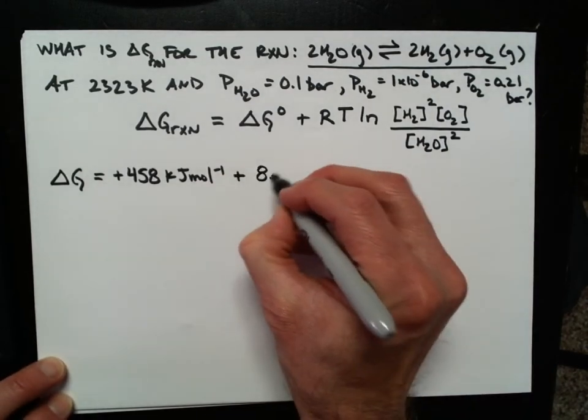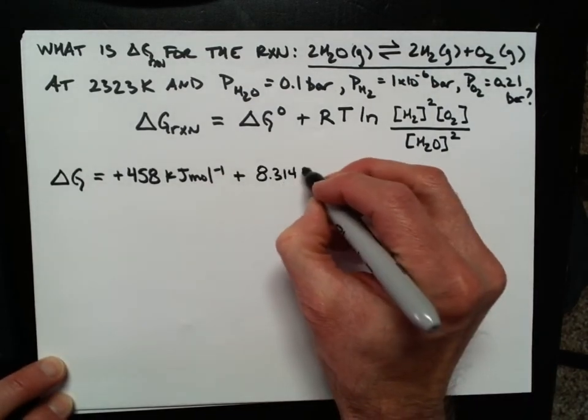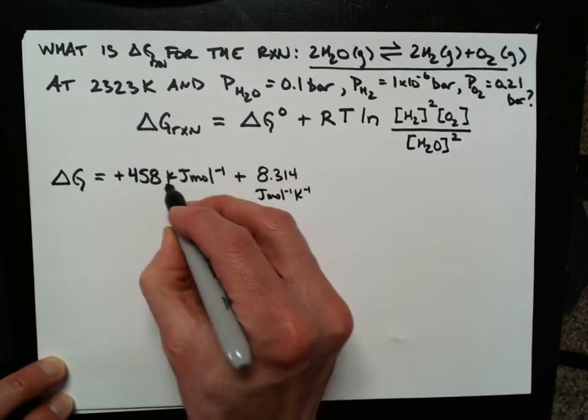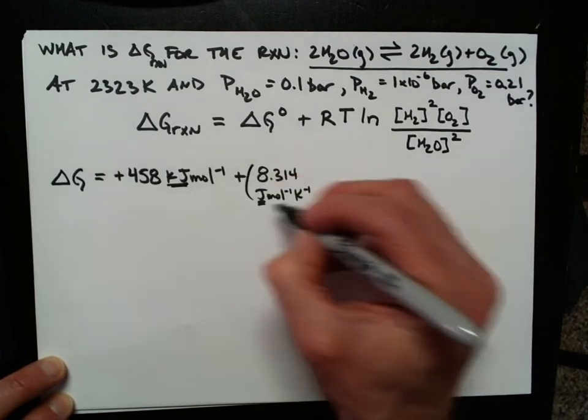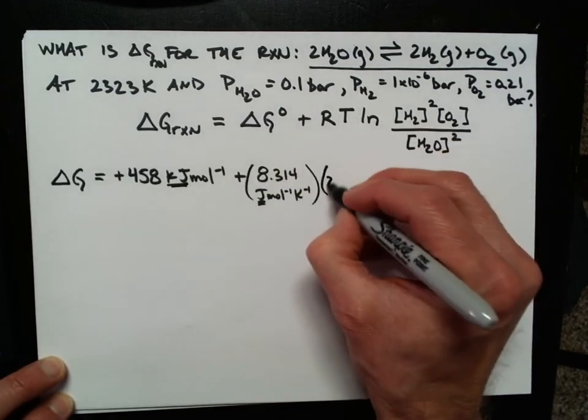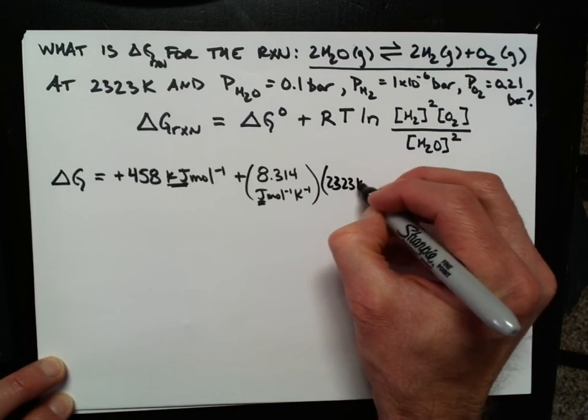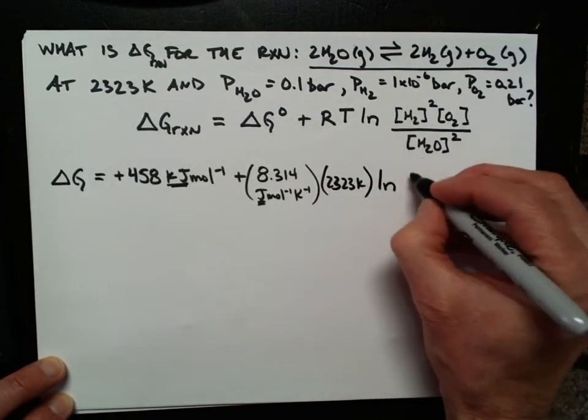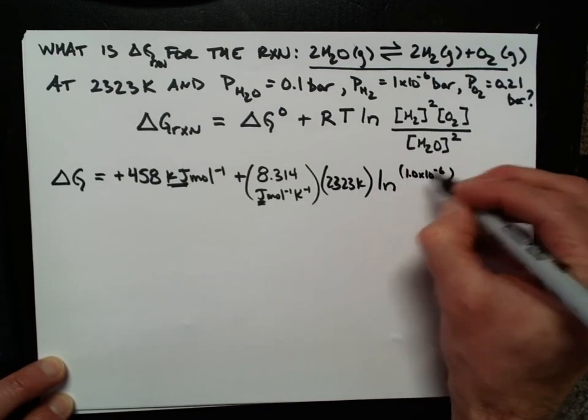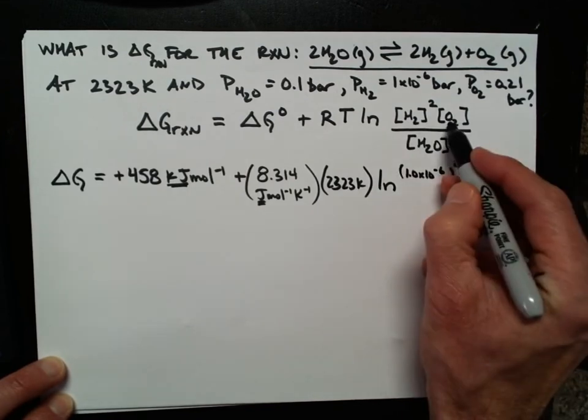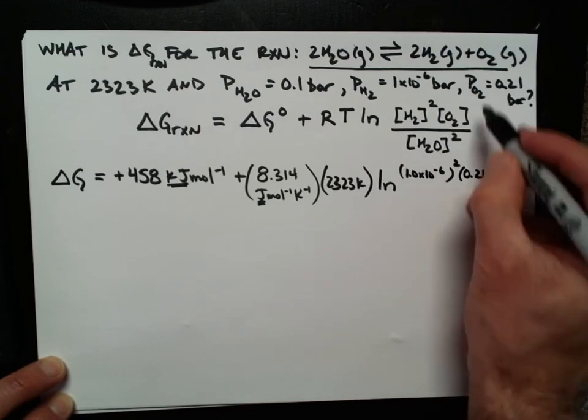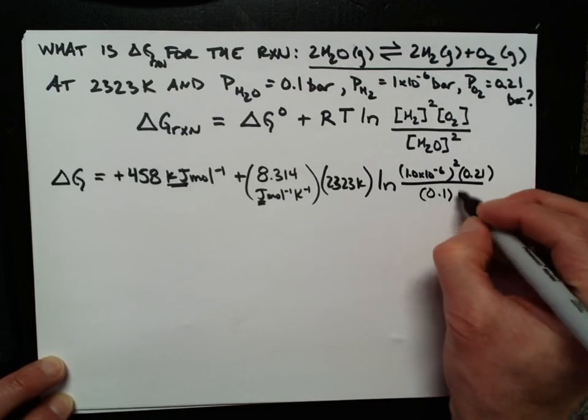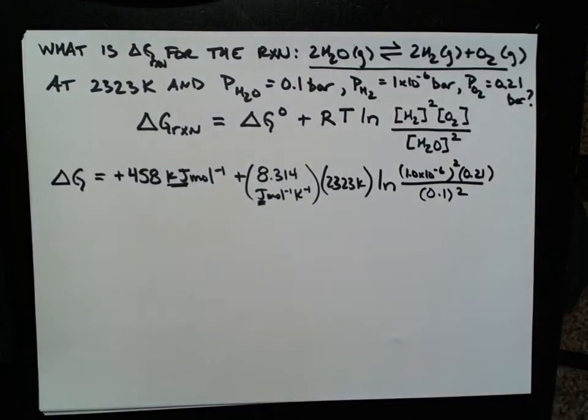plus R, which is 8.314, that's joules per mole per kelvin. Notice this kilojoules doesn't talk to this joules. We're going to need to multiply that by the kelvin temperature, 2323 kelvin, times the natural log of the hydrogen pressure squared, 1.0 times 10 to the negative 6 squared, times the pressure of oxygen, 0.21, divided by the pressure of water, 0.1 squared. I've got everything in place to calculate this. Let's give it a shot.